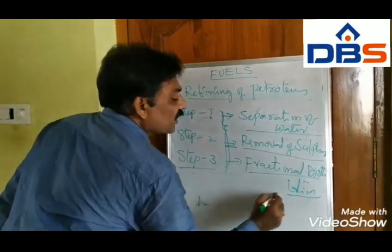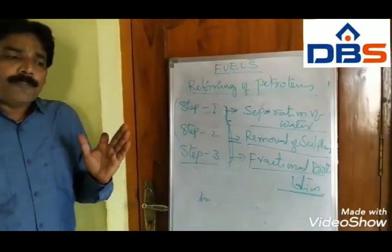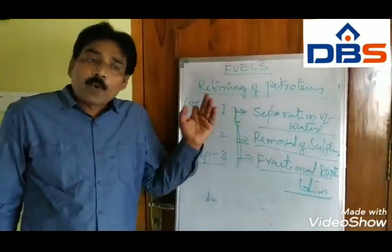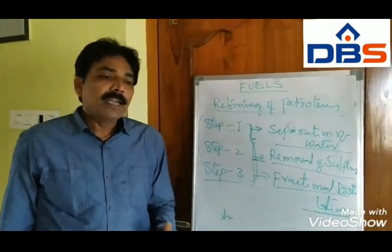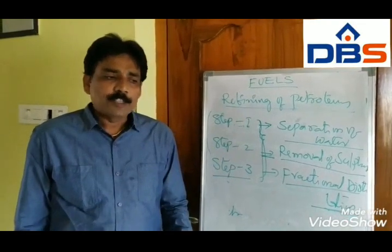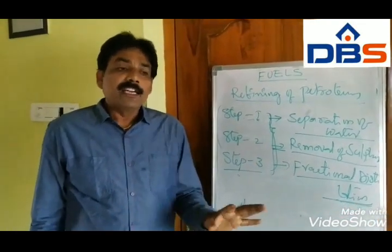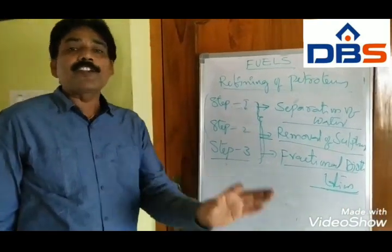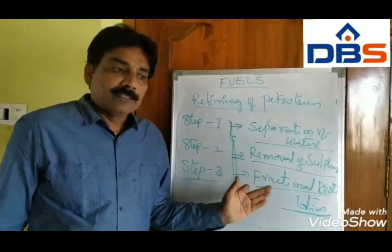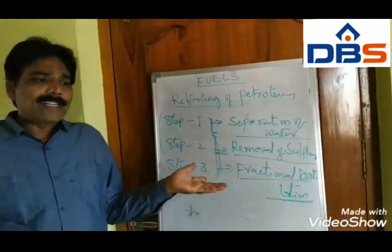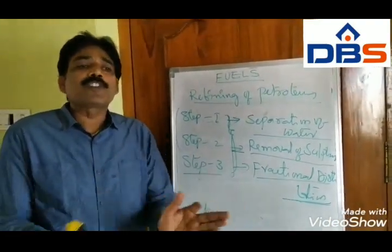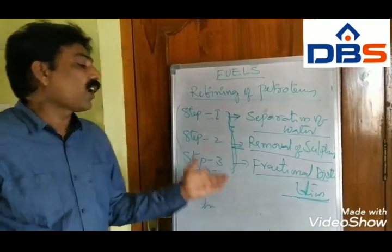Step three: fractional distillation. The remaining impurities are removed by fractional distillation. That crude oil or petroleum oil is heated at 400 degrees centigrade. At different boiling points, it releases different oils. This is called fractional distillation.